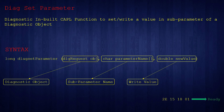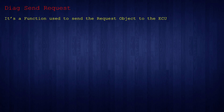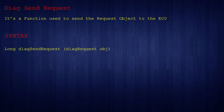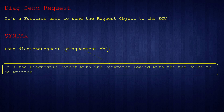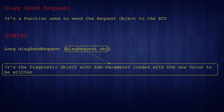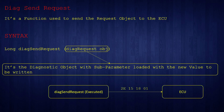By defining this function, we are making the DIAC write request ready for the respective DID. DiagSendRequest is a function used to send the request object to the ECU. The return type is long and it takes only one argument: the DIAC request object instance. The DIAC request object refers to the DIAC object we earlier created with a new value to be written in the subparameter, and now we are going to send that request through this function. Once DiagSendRequest is executed, this function will send the write request 2E151801 to the ECU, and this is how it works.